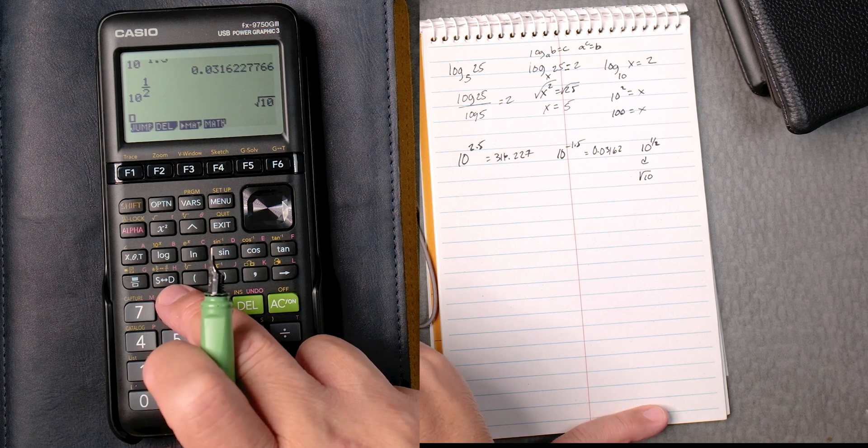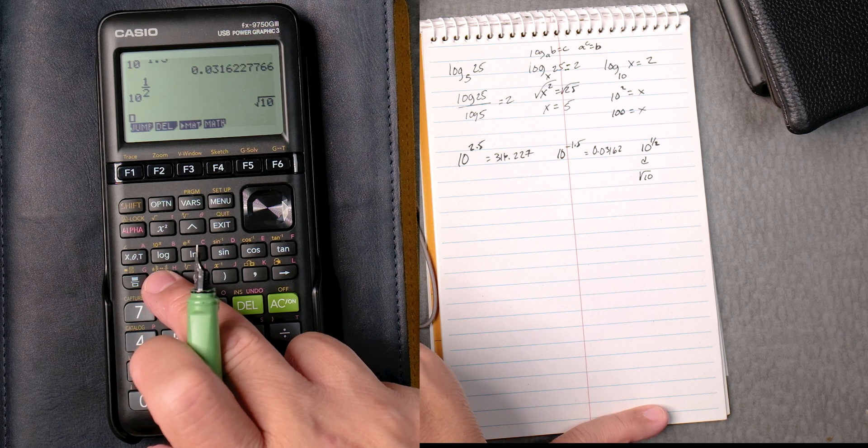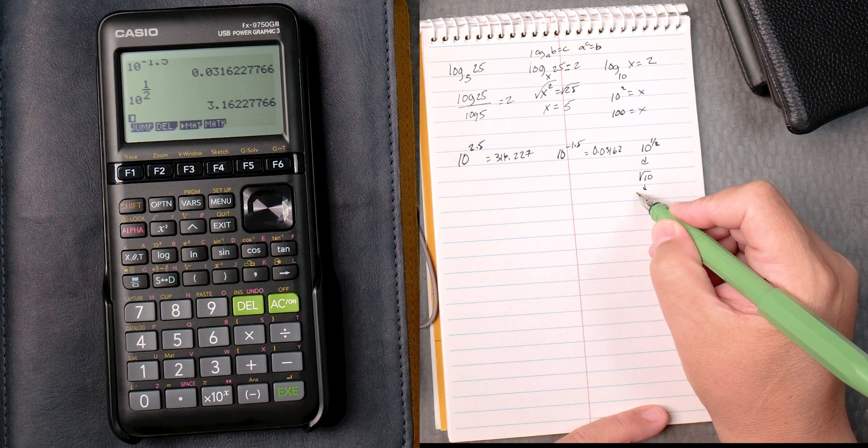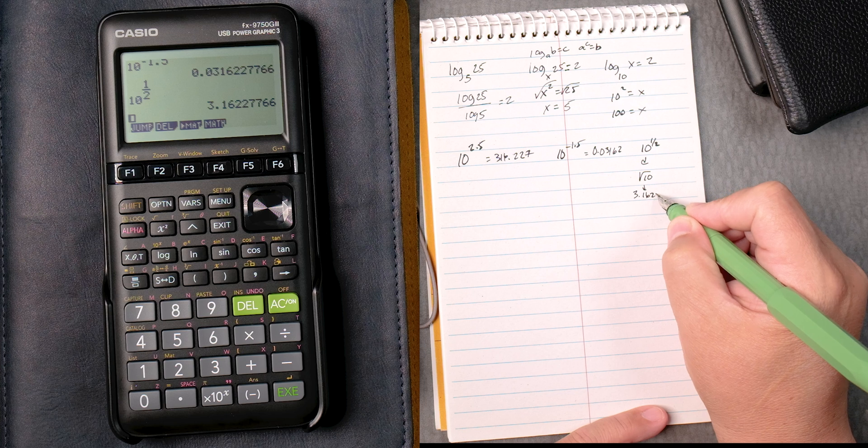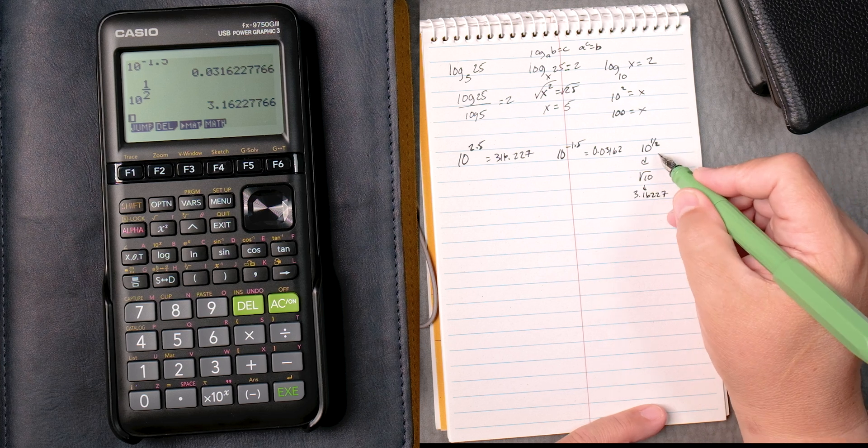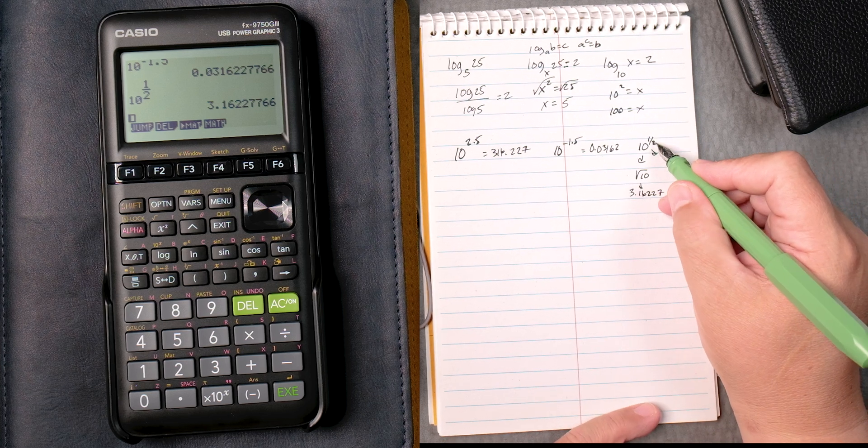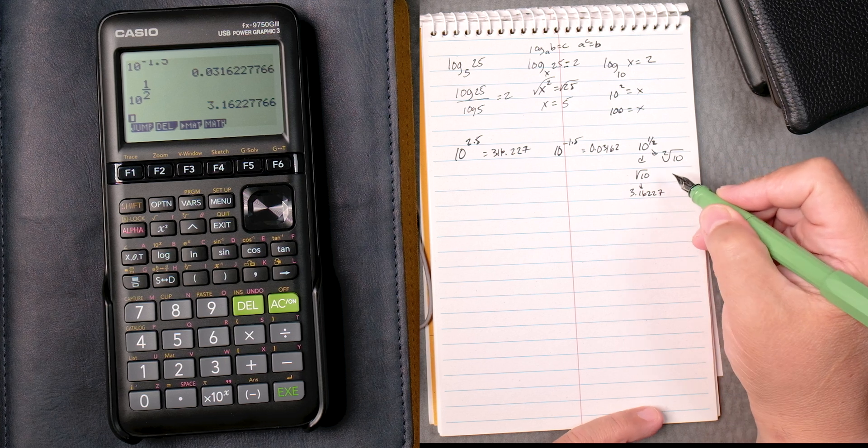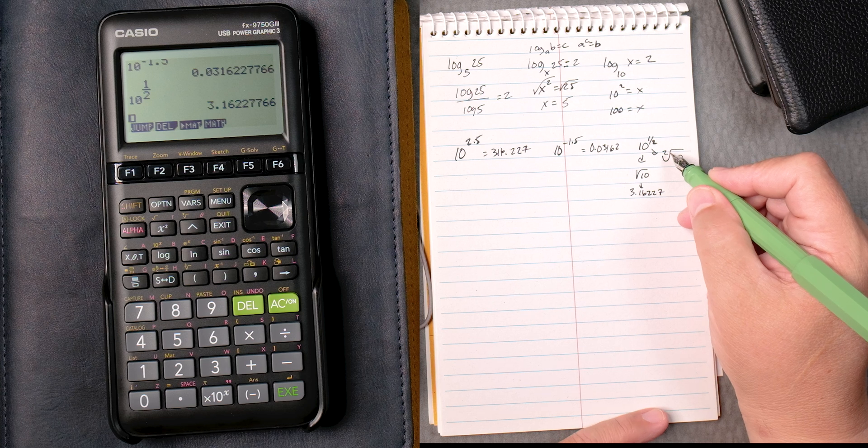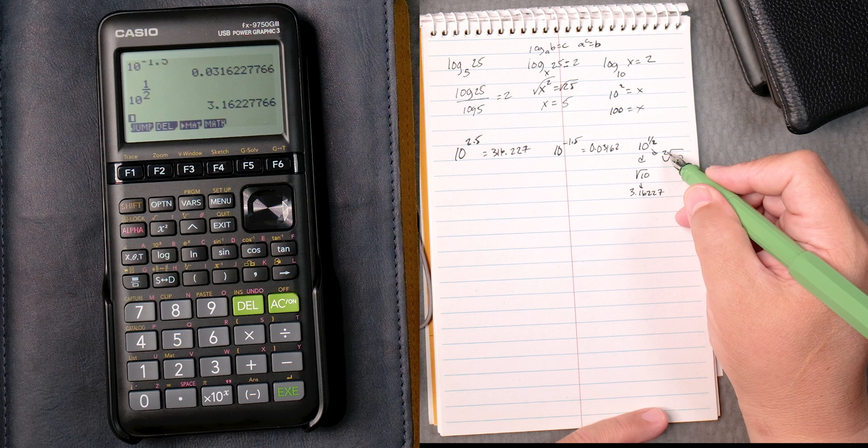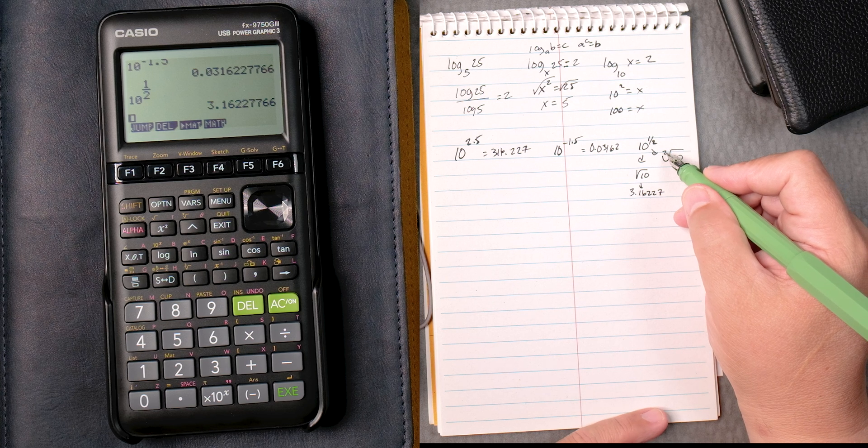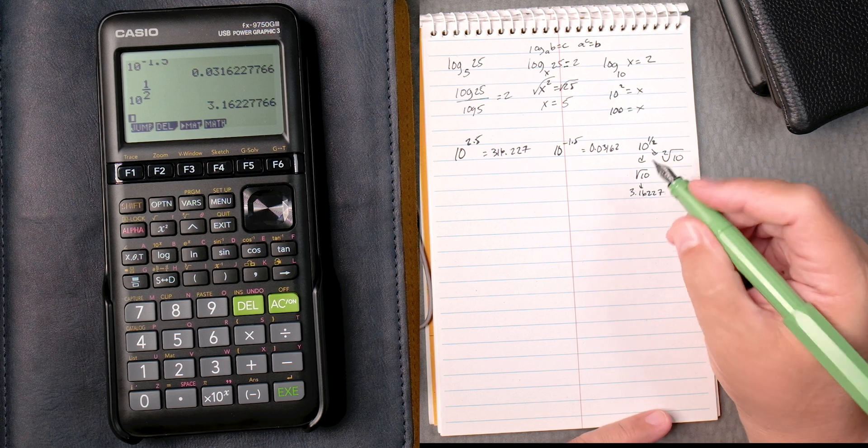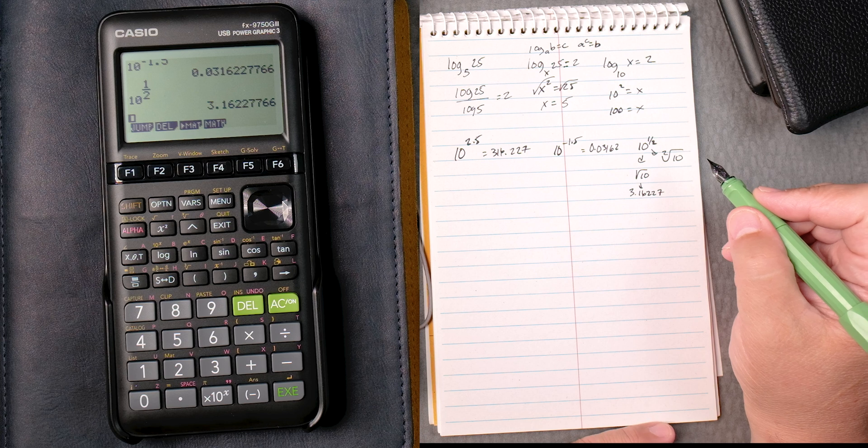You have this button, SD to DS. If we press it, you can see it changes that to a decimal, 3.16227. We know that this 2 is the index, or the root, the power, the second root of 10, or the square root of 10. That index doesn't show up when you do the square root.